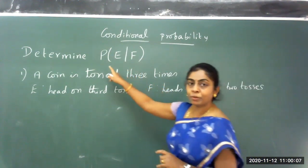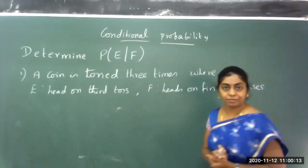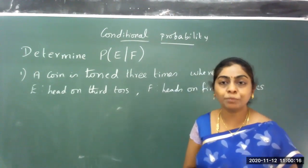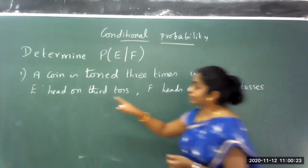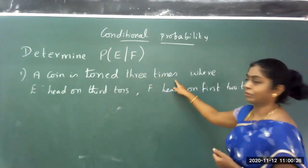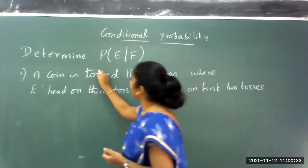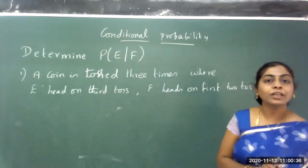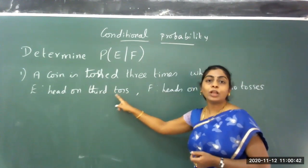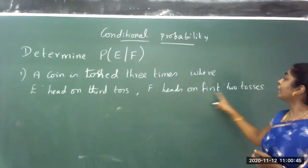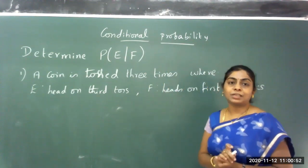Determine the conditional probability of event E given that event F has happened. So you have to find the conditional probability of one event when the other event has happened. For that, the first problem asks: a coin is tossed three times, where event E is a head on the third toss and event F is a head on the first two tosses. Using this, let us try to find the value of this conditional probability.